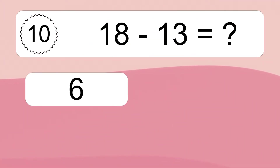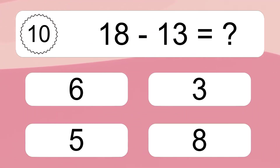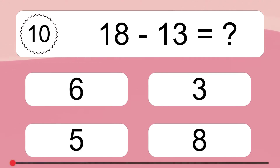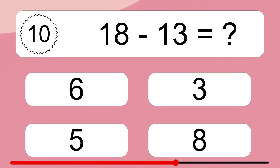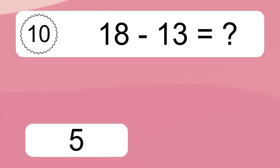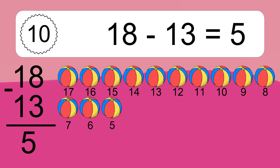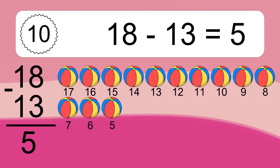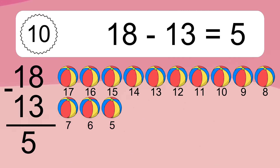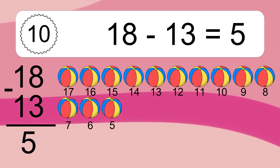18 minus 13 equals what? 18 minus 13 equals 5. Let's count it: 18, 17, 16, 15, 14, 13, 12, 11, 10, 9, 8, 7, 6, 5.